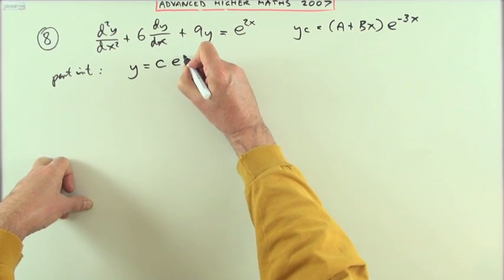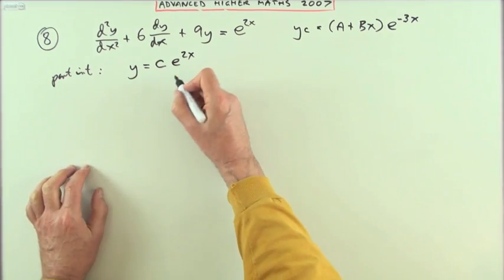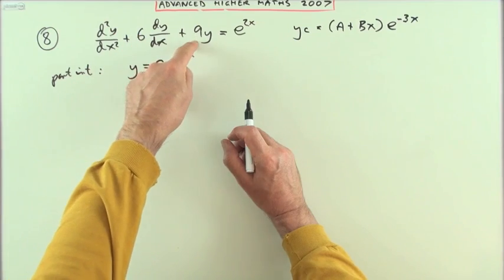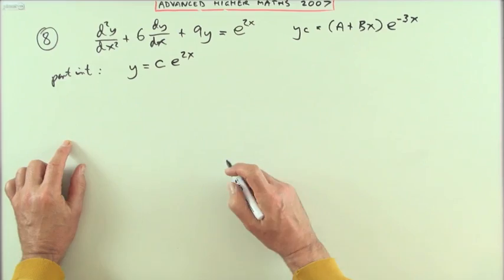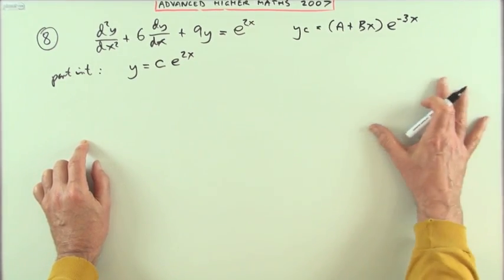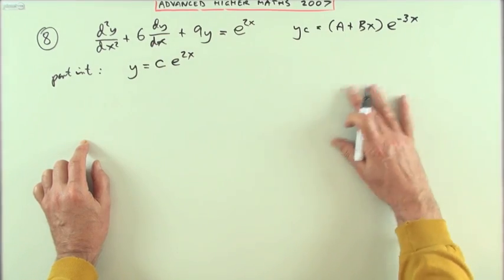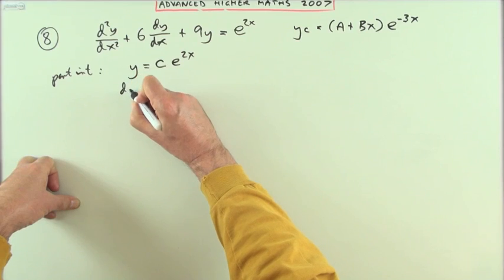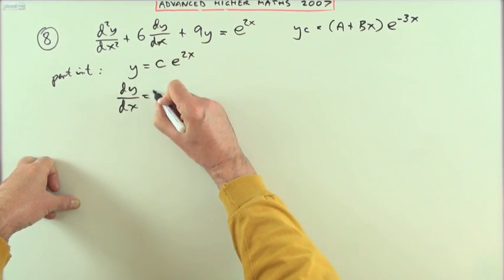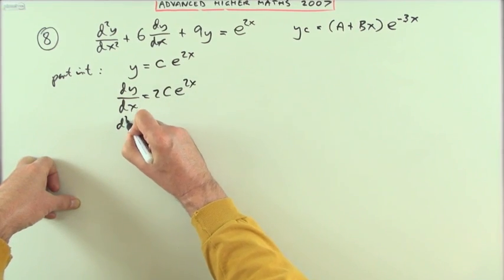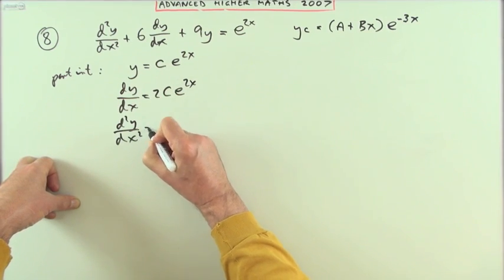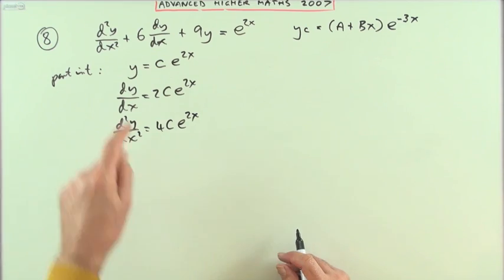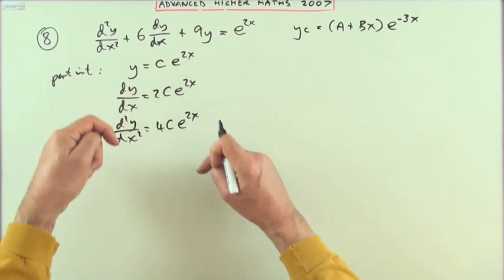For instance, if that was e^(-3x) or x·e^(-3x), I'd have to try x²·e^(-3x). However, that doesn't clash, so I can just try something of that form. What I'll try is y = c·e^(2x), then go through its derivatives. Differentiating: dy/dx = 2c·e^(2x). Differentiate again for the second derivative: d²y/dx² = 4c·e^(2x).